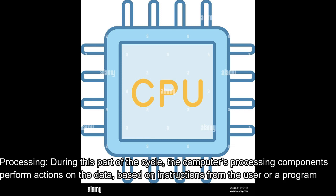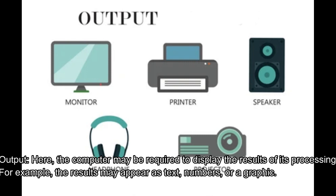Output: Here the computer may be required to display the result of its processing. For example, the result may appear as text, numbers, or graphs.